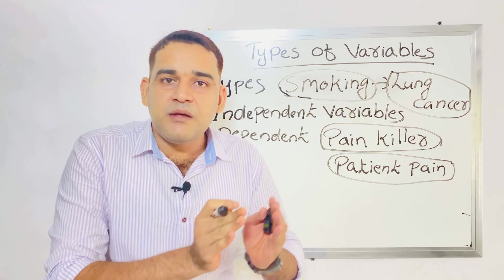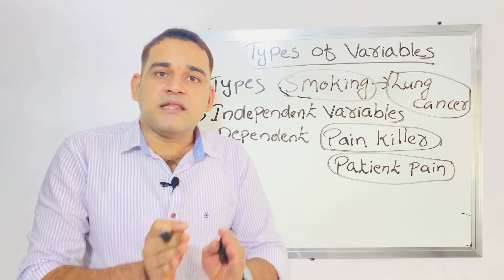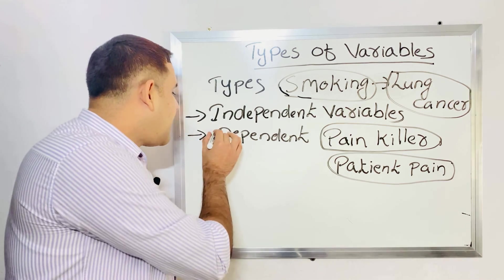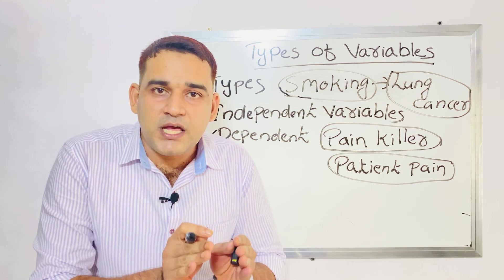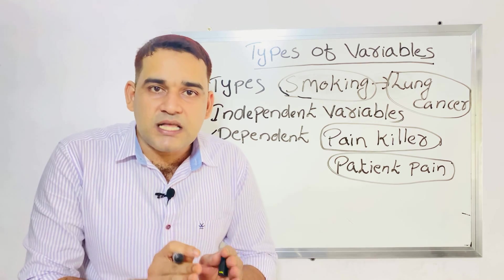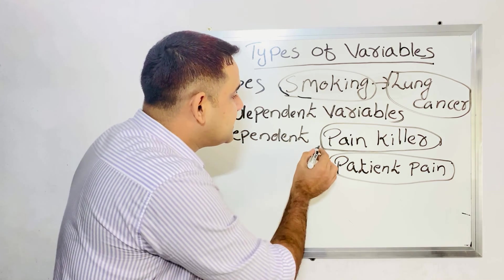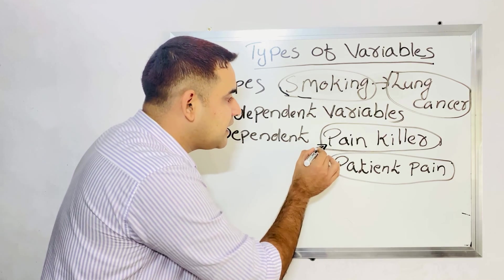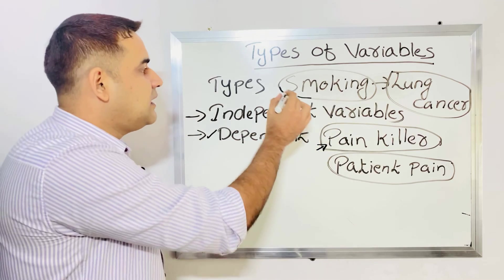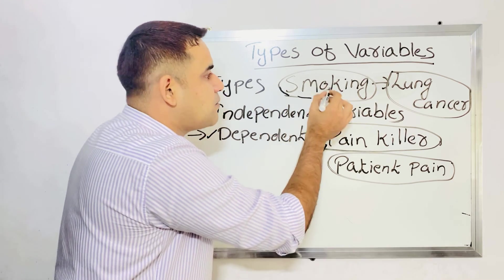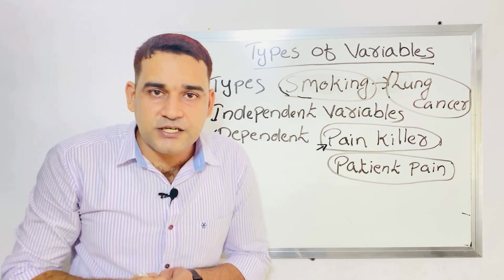Now we can see the detailed definition of independent variable. Independent variable is the variable that is purposefully manipulated or changed by the researcher to see the effect on the dependent variable. Here the researcher is purposefully giving painkiller injection to see the effect on patients with pain — that is the dependent variable. And the researcher is purposefully allowing smoking to see the effect on normal persons who then develop lung cancer.